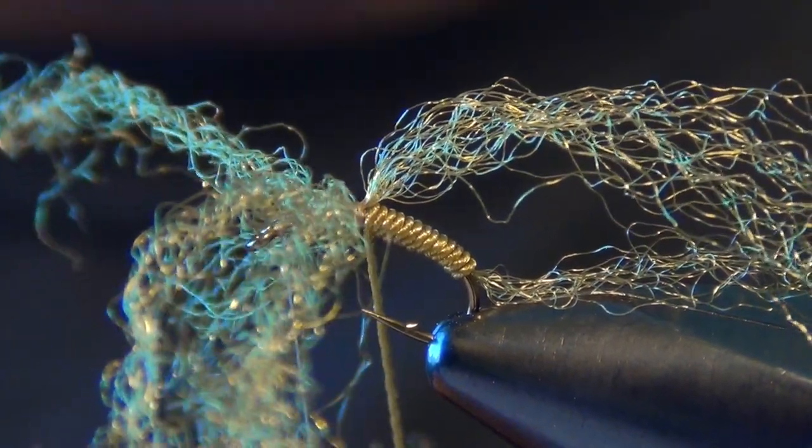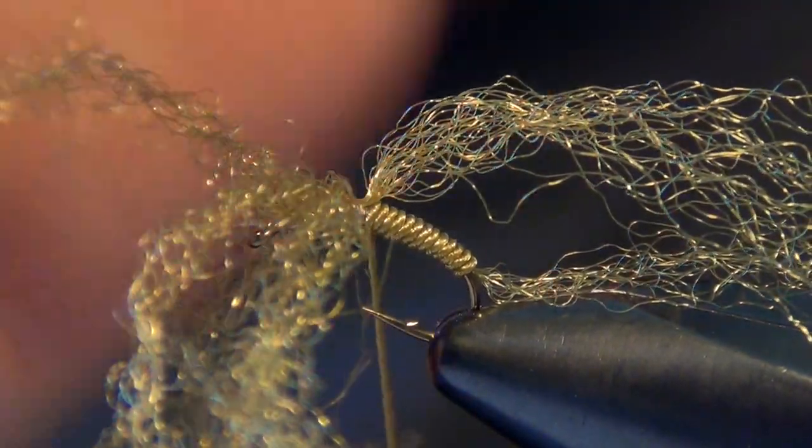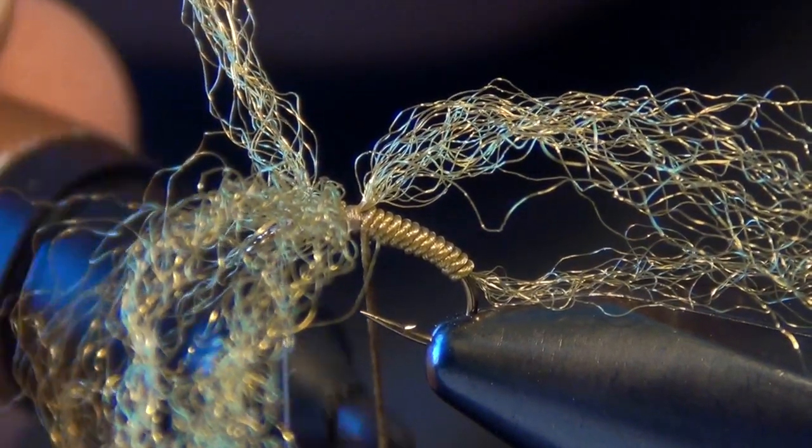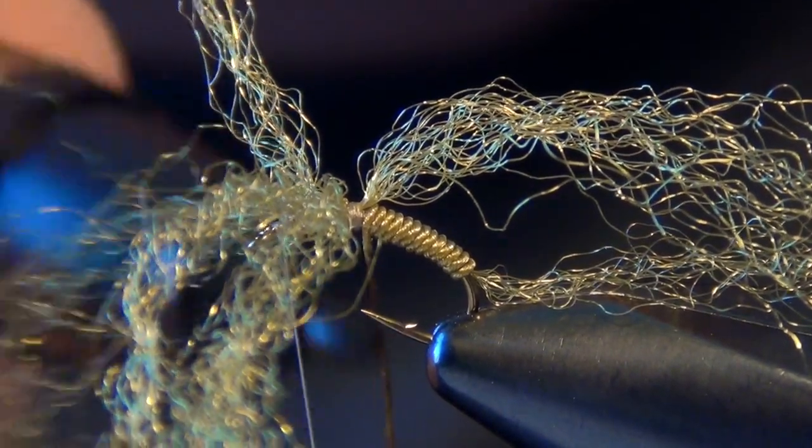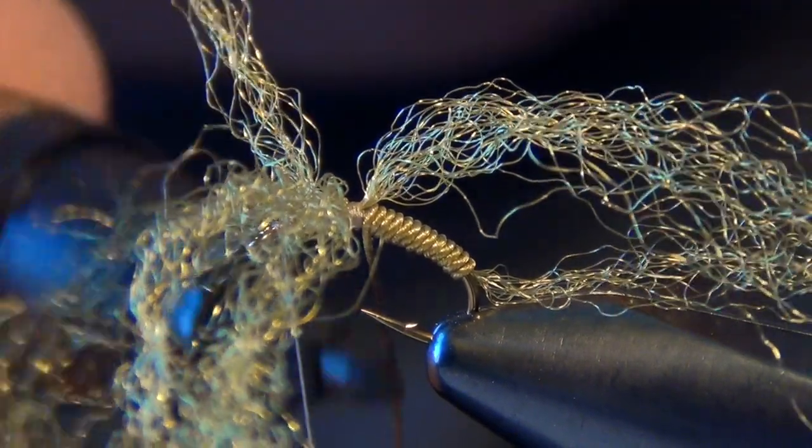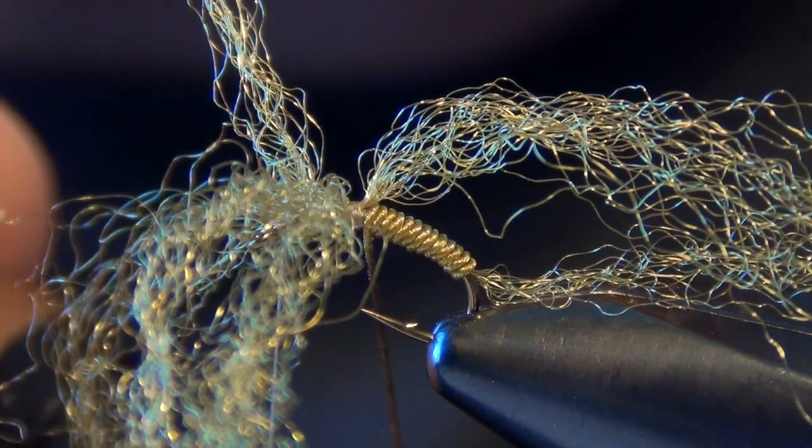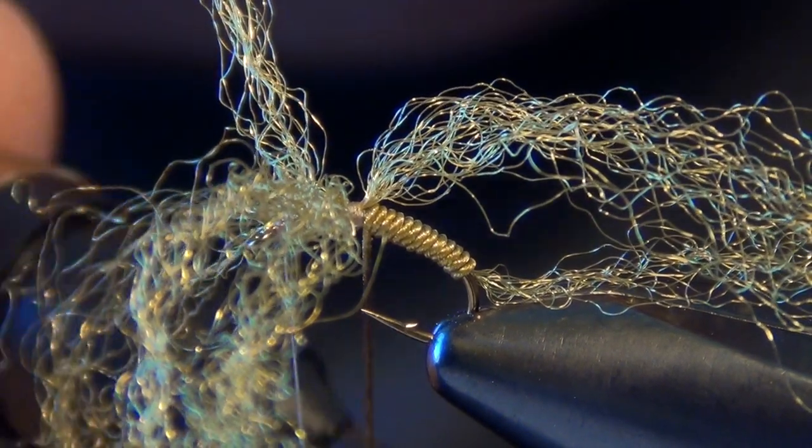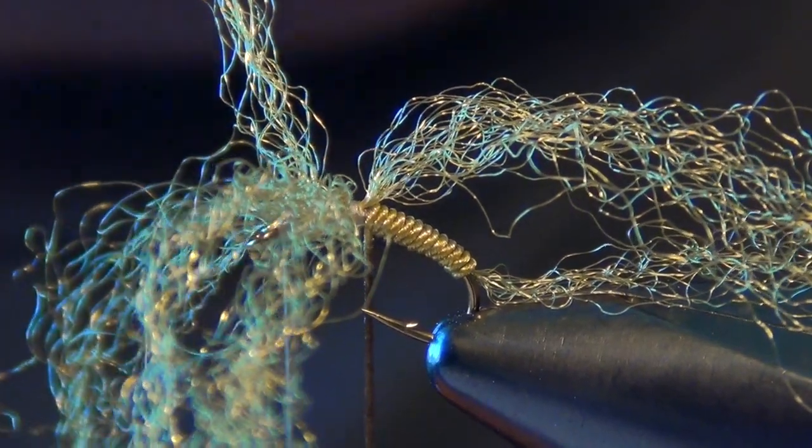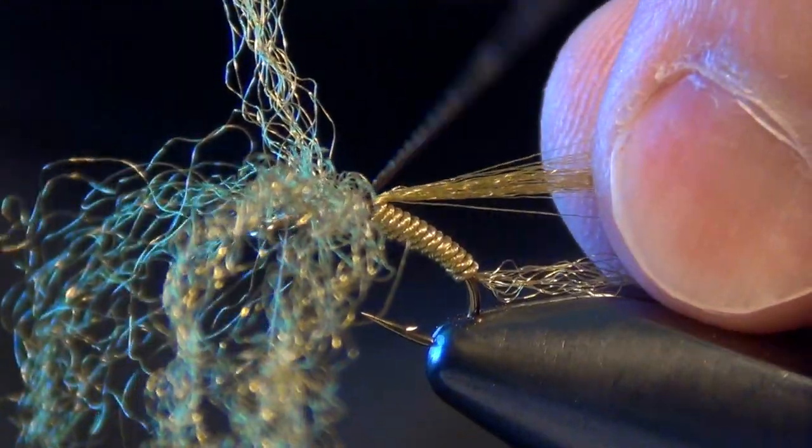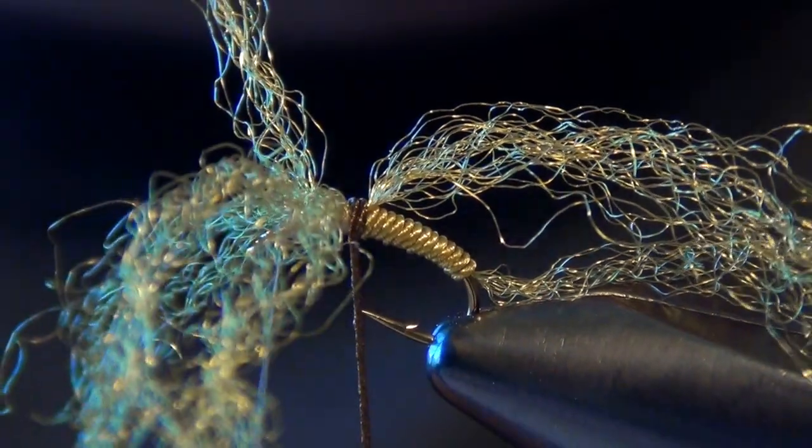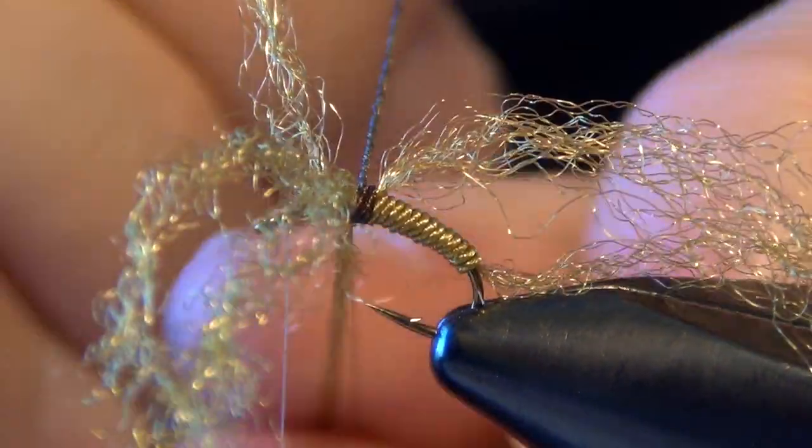Now we're going to take a brown marker and I'm going to color up my rope of Zelon here with the brown marker. This gives the fly the kind of typical golden stone two-tone finish. If you've ever looked at a golden stone, they're not all golden, they have a lot of brown in them. I have my rope colored, now just going to continue to wrap that forward. Usually I can only get two wraps, maybe three, but we'll just stick with two on that one.